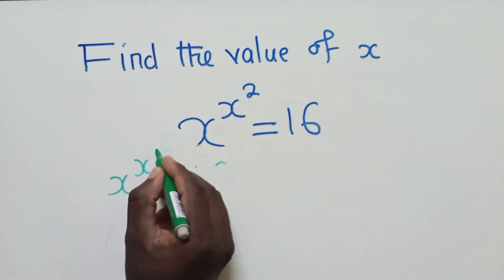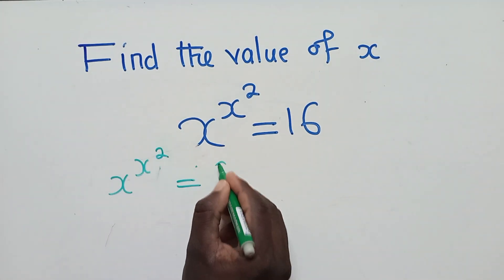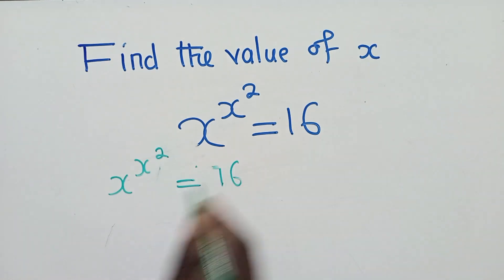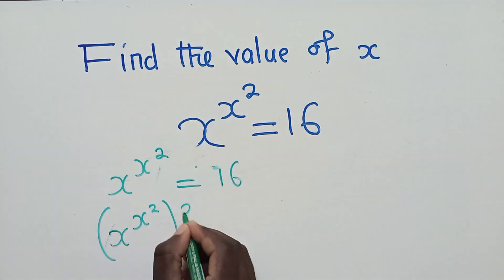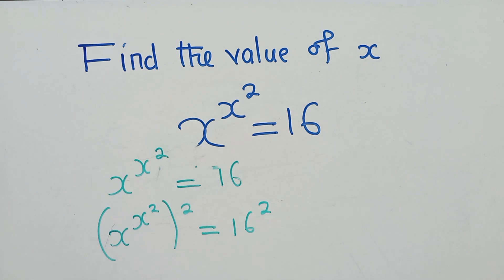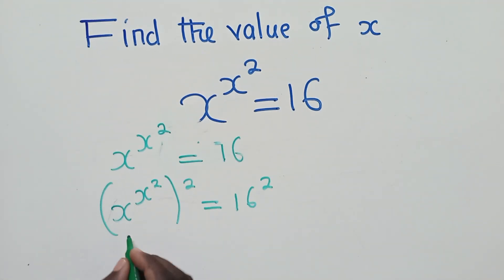Let me put it here. x^(x^2) = 16, which is this. We're going to say (x^(x^2))^2 = 16^2. Next will be to distribute this power. We get rid of the brackets.